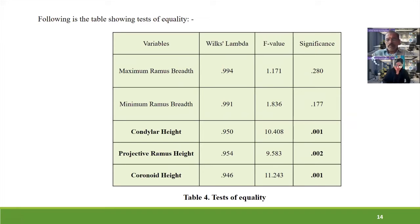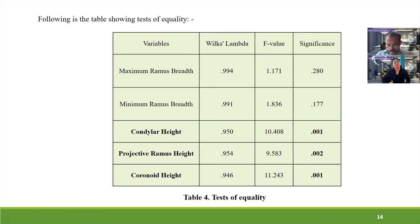All parameters recorded values nearer to one, meaning near-perfect association between variables. The F value shows the highest sexual dimorphism. Coronoid height recorded the highest F value, followed by condylar height and projective ramus height. Maximum and minimum ramus width recorded the lowest F values. Condylar height, projective ramus height, and coronoid height recorded P-values less than 0.05, meaning these parameters are highly significant in this study.